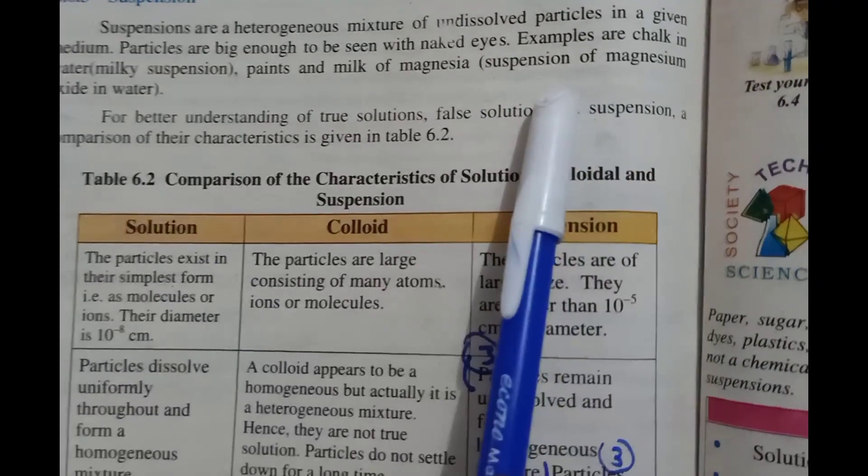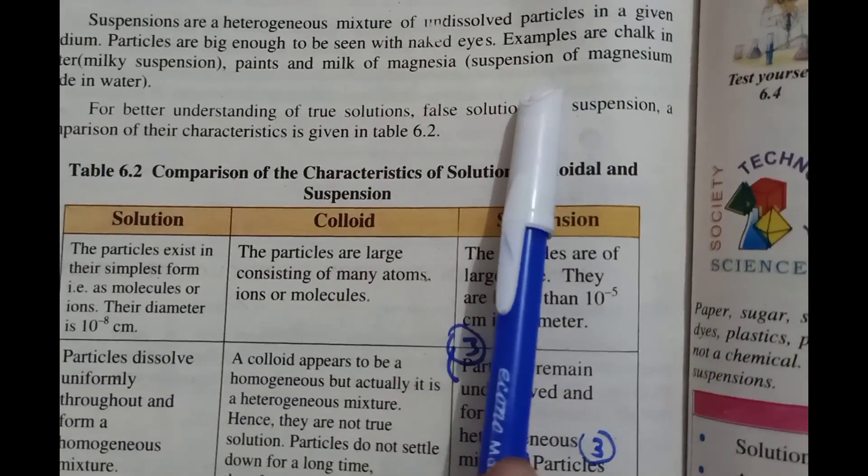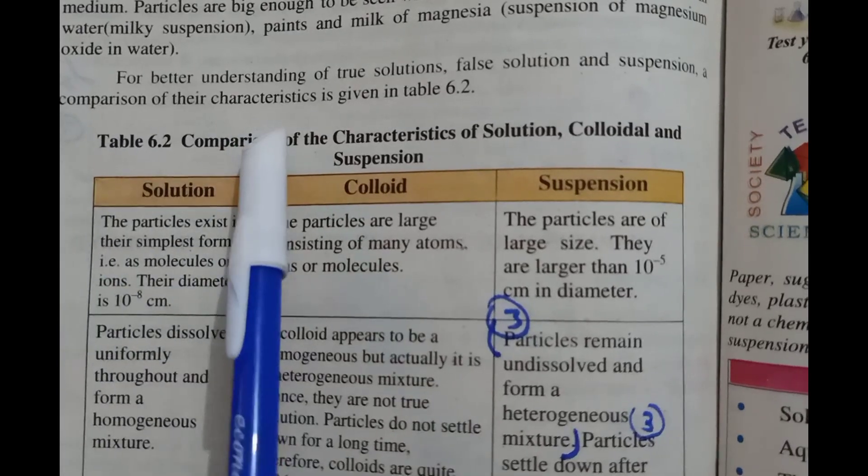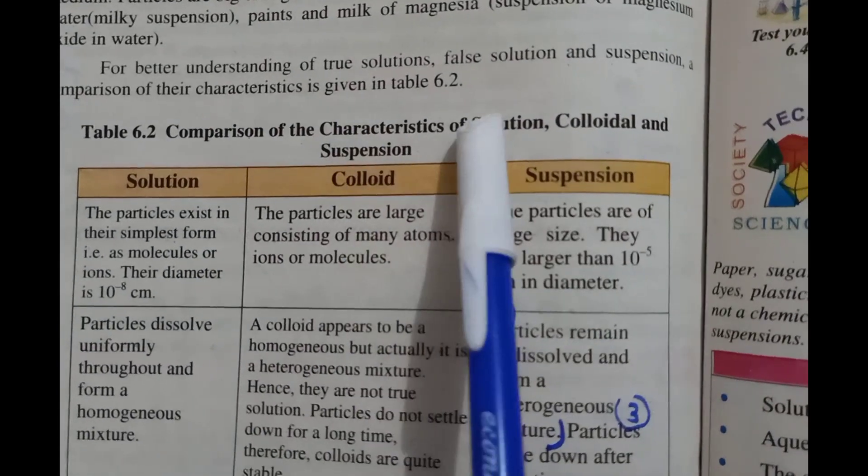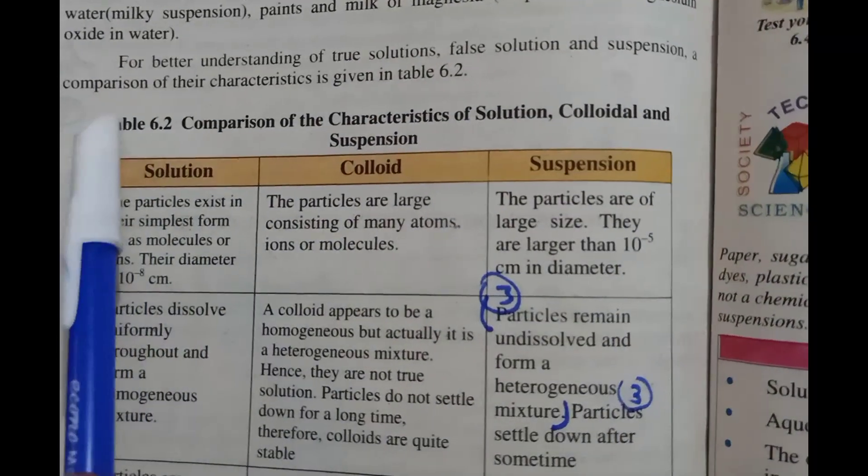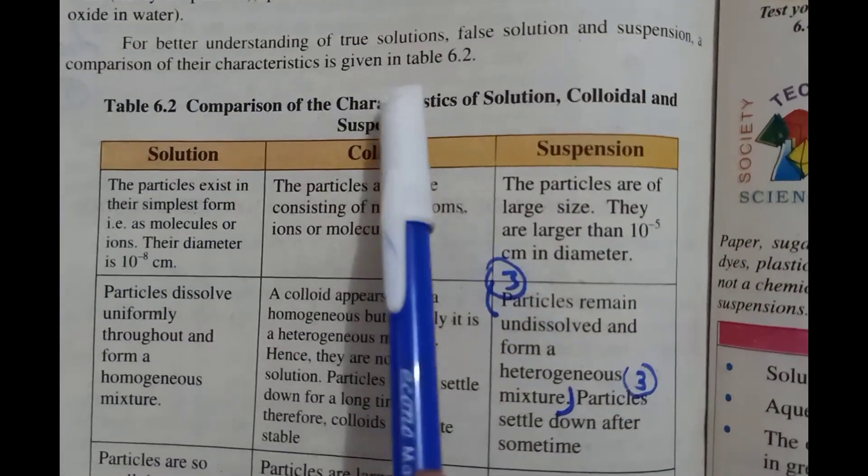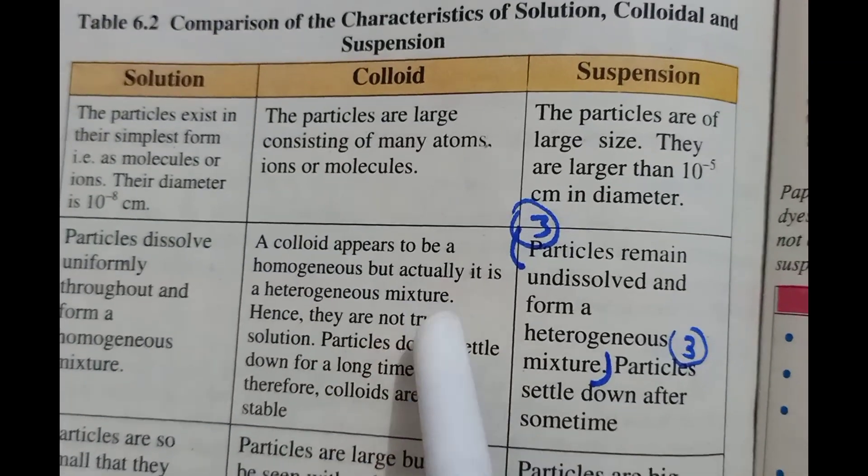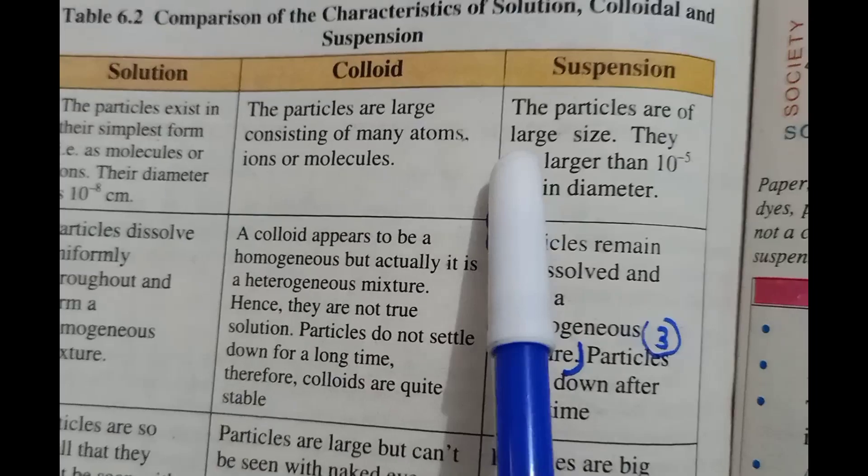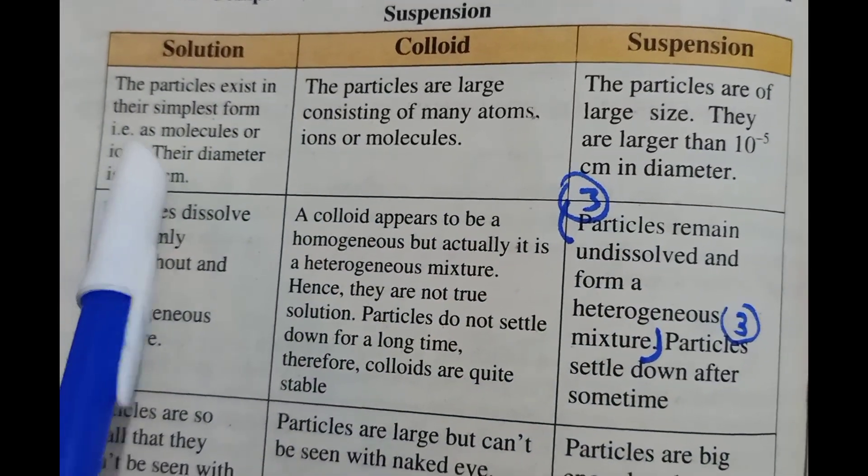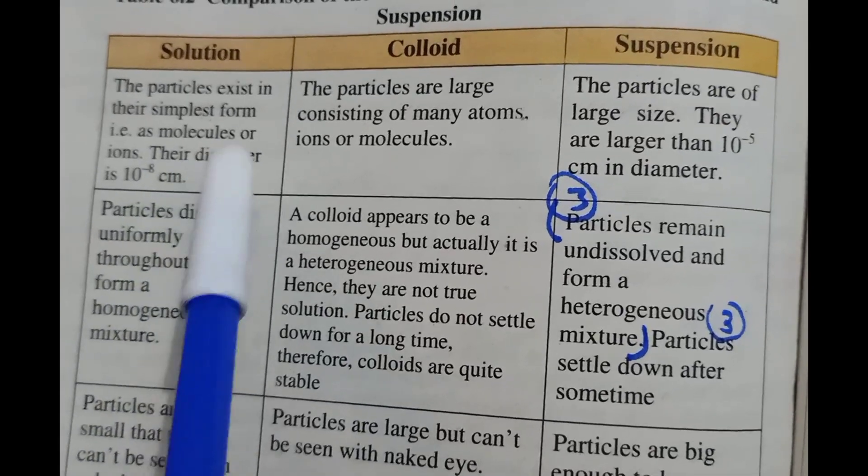...their characteristic properties is given in a table. Now we read this table: solution, colloid, suspension. In solutions, the particles exist in their simplest form, for example as molecules or ions. Their diameter is 10 to the power minus 8 cm. In colloids, the particles are...